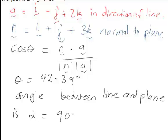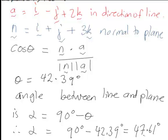So therefore in this case, the angle between the line and the plane will be 90 degrees minus 42.39 degrees, which works out here to be 47.61 degrees in this case.